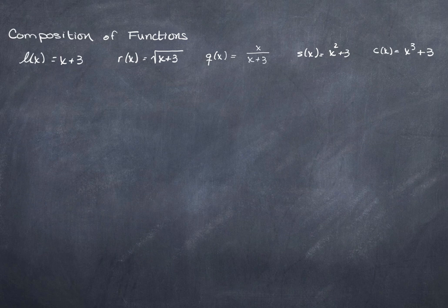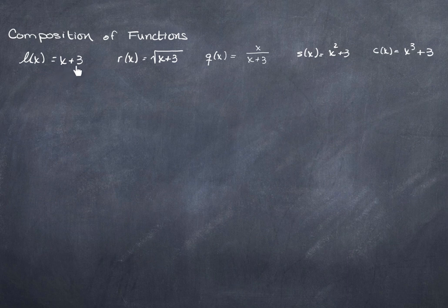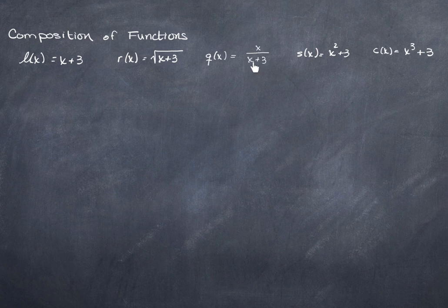We can do a lot of different things with these functions. I've chosen these names because L of x is a line — a linear function — so L stands for line. Q stands for quotient, R stands for radical (I could have used R for rational, but I wanted different names), S stands for squared, and C stands for cubed. It's going to be easier to refer back to them if we can remember, for example, that Q is our quotient function.